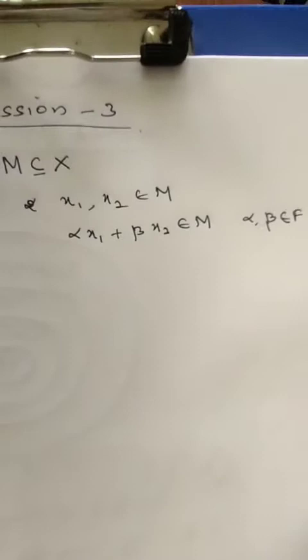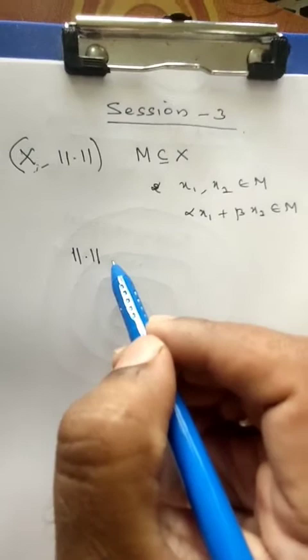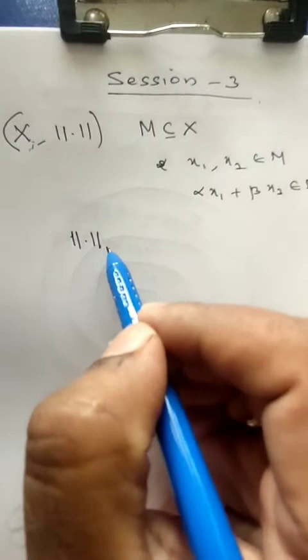Can this subspace become a norm linear space also? Yes, definitely it becomes a norm linear space. The norm used for M is the norm of the superset or base space X itself. So the norm of X itself we will use for M, and if we restrict that norm to the subspace, we denote it as the norm of X restricted to M.